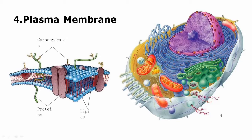The plasma membrane is also known as the fluid mosaic model and also known as the cell membrane. The plasma membrane provides warmth to the cells and covers the whole cell. It also provides protection, shape, and strength to the cell, and it is involved in the passage of materials from inside and outside of the cell.